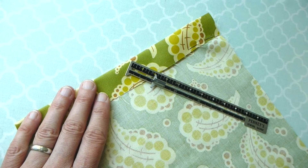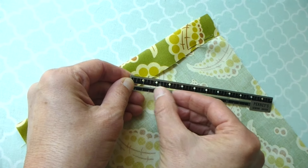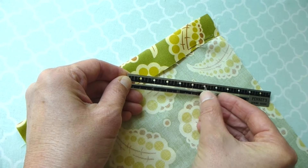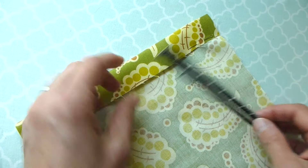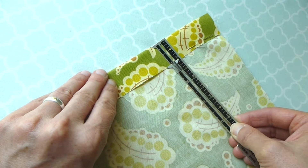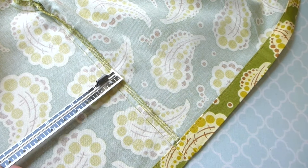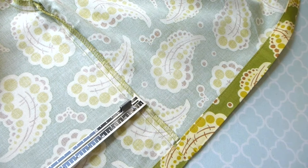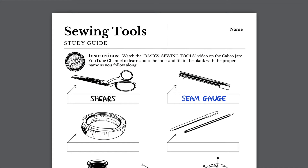This tool is a seam gauge. It is a small ruler with a slider that can be positioned to mark a desired measurement. This is useful for measuring an amount of fabric to fold under, checking the width of your seam allowances, measuring buttonholes, and many other purposes. Label the seam gauge on your study guide.